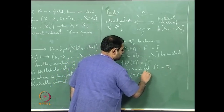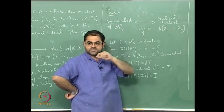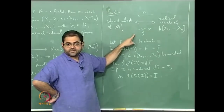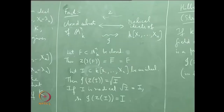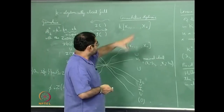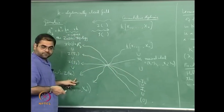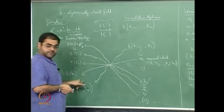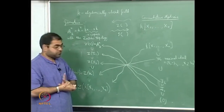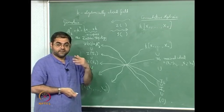So if I is radical, rad(I) equals I, and I(Z(I)) equals I. This means that if we start with a radical ideal, go to the geometry side and come back, we end up with the same ideal. These two statements show that Z and I are inverse maps of each other, giving the bijective correspondence. Moreover, two ideals have the same zero set if and only if their radicals are the same.